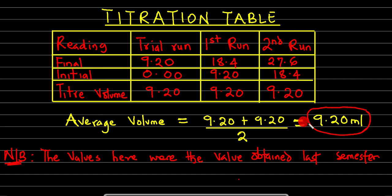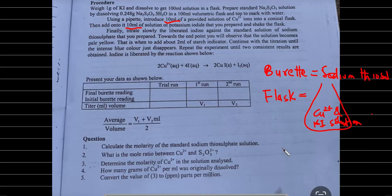The average volume is calculated as V1 plus V2 all over 2. From the manual they excluded the trial run. Even if you include the trial the answer would be the same — it would be divided by 3 instead. The main aim of this video is to guide us on how to carry out the calculations.